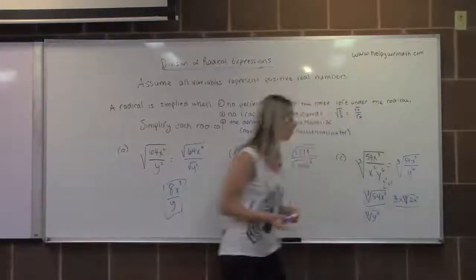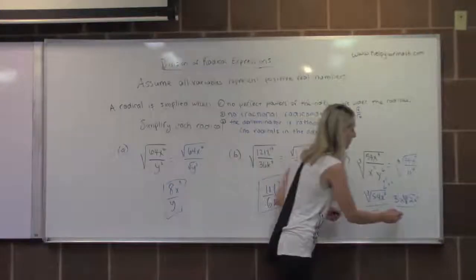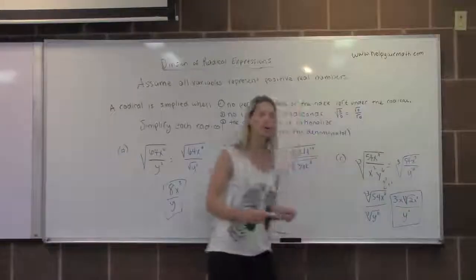In the denominator, the cube root of y to the sixth, that would be y to the sixth over 3, which is y squared. And that would be the totally simplified answer for letter c.